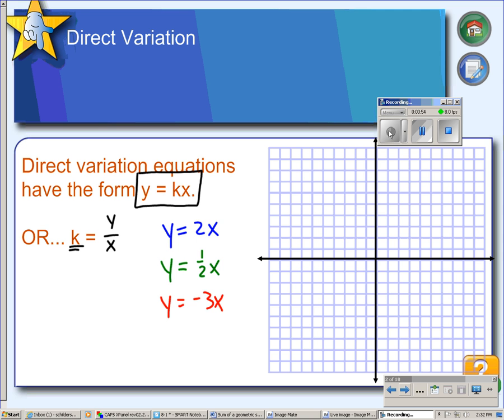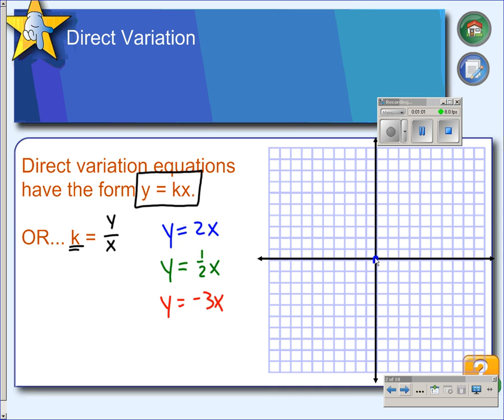So here are three examples of direct variation equations. And if we were to graph them, each one would go through the origin and it would have a slope. The blue one has a slope of 2.